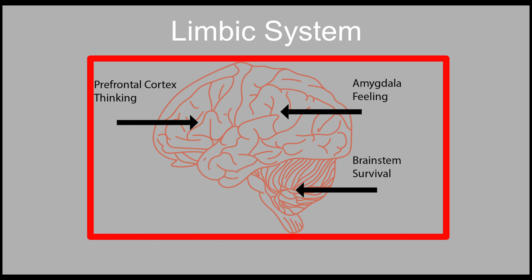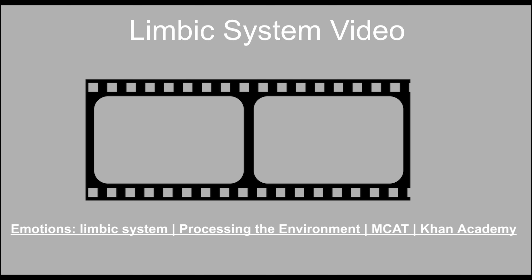The limbic system controls our behavioral and emotional responses. These behaviors, such as feeding, reproduction, and caring for our young, are just a few examples of how our limbic systems keep us and others alive. We've covered these responses in another module. Our limbic system is comprised of the thalamus, hippocampus, and amygdala. Be sure to take a look at this brief video explaining the limbic system.